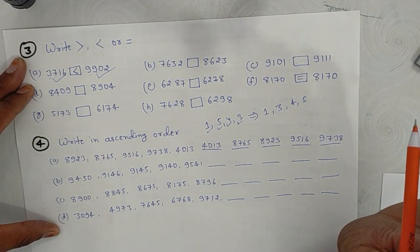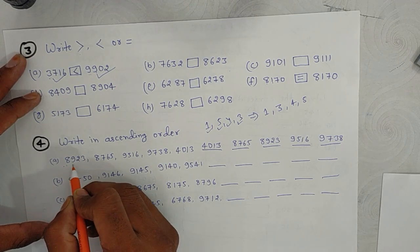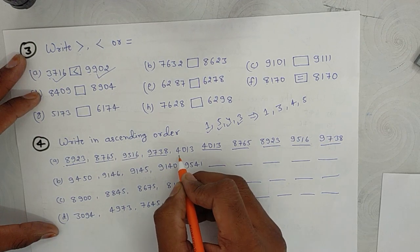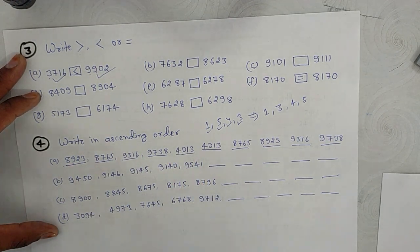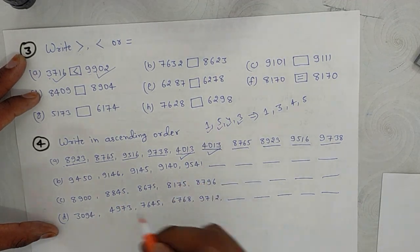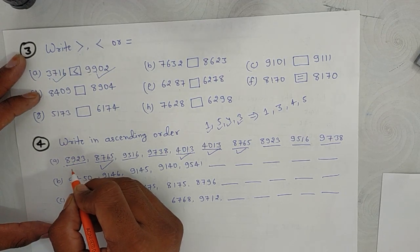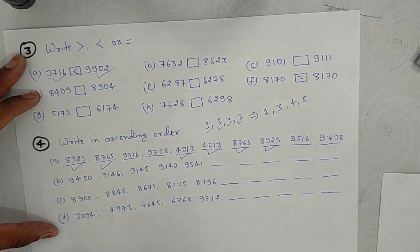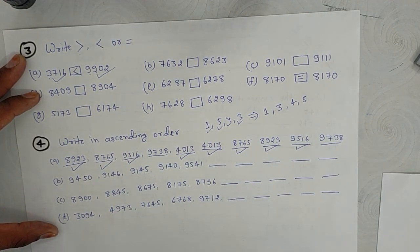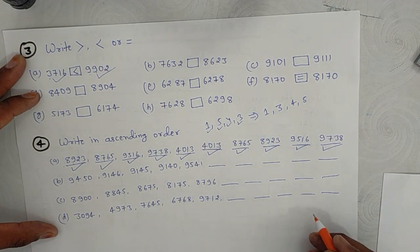This is the ascending order. Next we have descending order. Here we have the numbers 8,923; 8,765; 9,569; 9,738; and 4,039. We see the smallest number is 4,039, then 8,765, then 8,923, then 9,569, and the largest is 9,738. This is how we solve ascending order.